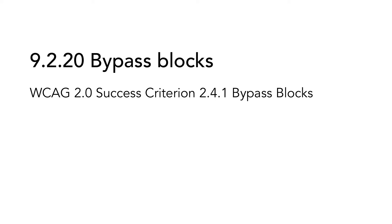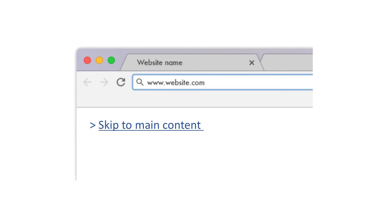9.2.20 Bypass Blocks is based on WCAG 2.0 Success Criterion 2.4.1 Bypass Blocks. When navigating with a keyboard, it becomes very time consuming to be forced to go through blocks of content that are repeated on several pages. Therefore, whenever you have blocks of content that are repeated on multiple web pages, you need to provide the user with a mechanism to bypass the block. The most common example is to provide the user with a link to bypass the menu and go directly to the main content.